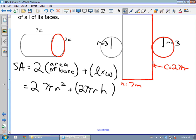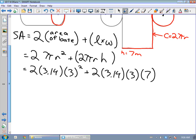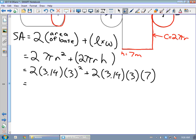So we just need to substitute in our values here and evaluate. 2 times 3.14 times 3 squared plus 2 times 3.14 times 3 times 7. By now, we're just punching these numbers into our calculator, so we can jump right to the final answer here. I get 188.4 meters squared.